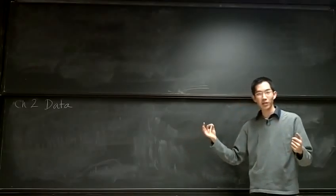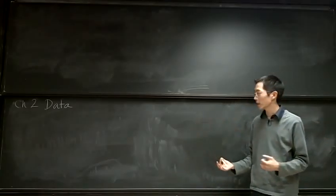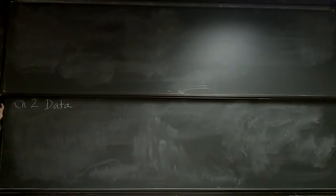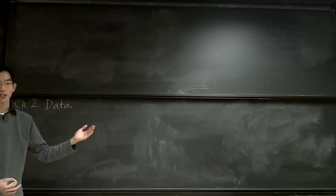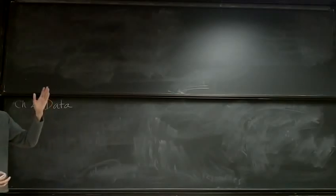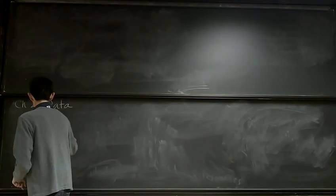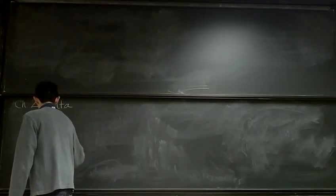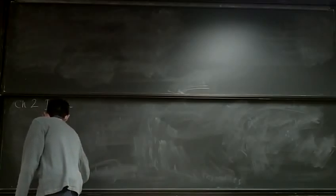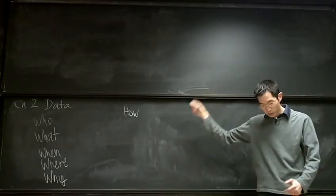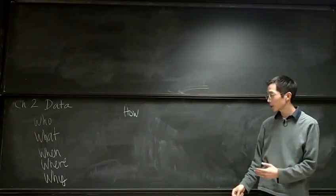So data is just information that we're gathering. When we're talking about data for statistics, we're talking about kind of organized information. Now, there's information everywhere, but in data we have structure. When you learned how to write a paragraph in elementary school, you probably learned about the five W's and the H — who, what, where, when, why, and how.